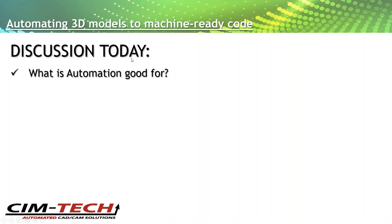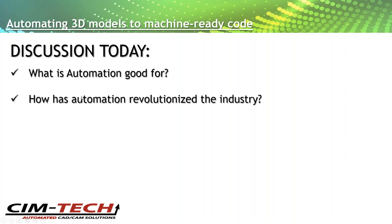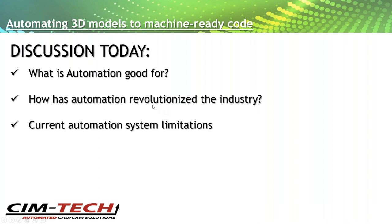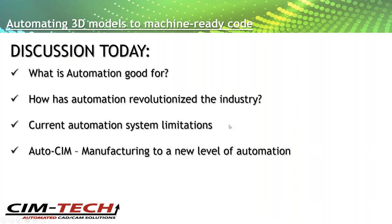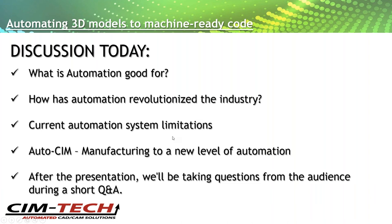Today we're going to talk about what automation is, what it's good for, how automation revolutionized the industry compared to doing things manually, some of the limitations in today's systems, and a new product called AutoSim that really automates the automation and takes your manufacturing to a new level. After the presentation, we'll take time to answer your questions.